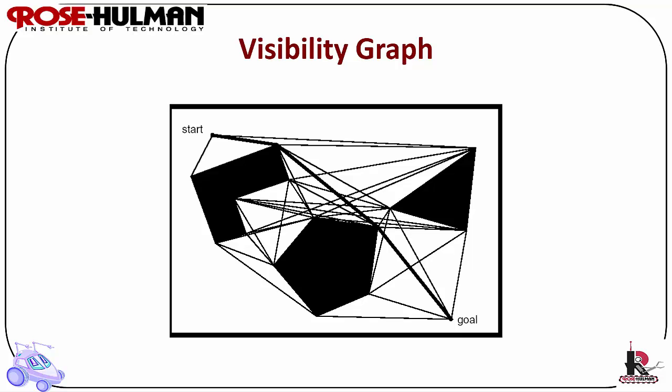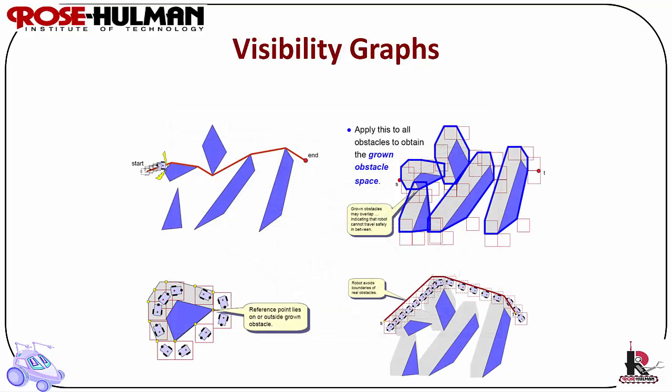One solution is to grow obstacles by the robot's radius or modify the solution path. Since the vertices are connected in a visibility graph, if the robot attempts to follow the path, there will be some edges that are not navigable. The solution is to grow the obstacle by the size of the robot in order to eliminate this problem.